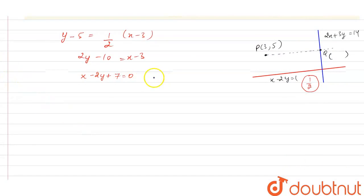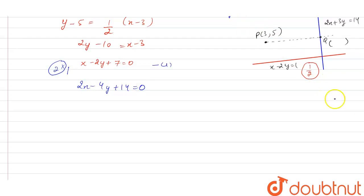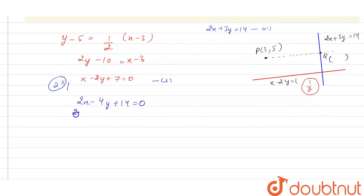Let x - 2y + 7 = 0 be equation 1, and 2x + 3y = 14 be equation 2. Multiplying equation 1 by 2, we get 2x - 4y + 14 = 0, or 2x - 4y = -14. We now solve this together with equation 2: 2x + 3y = 14.